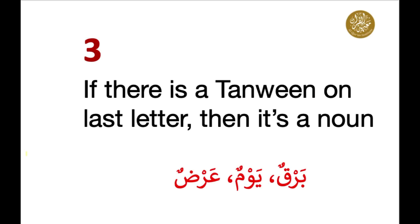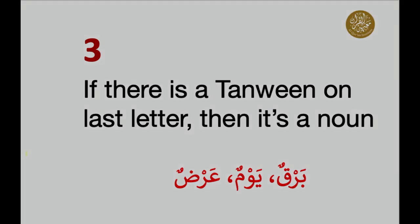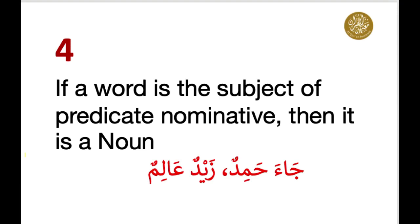Number four: if a word is the subject of a predicate nominative or the doer of the verb, then it is a noun. For example, 'jaha Hamidun' — Hamidun is the doer, so Hamidun is the noun. 'Zaidun 'alimun' — Zaid is knowledgeable; here Zaid is the subject and 'alimun is the predicate, so Zaid is a noun.